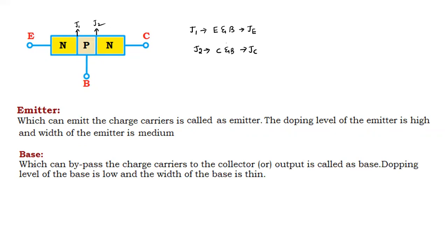The base is the terminal which bypasses the charge carriers to the collector — that is, the output. The base bypasses the charge carriers from the emitter to the collector. The doping level of the base is low, and the width of the base is very thin.